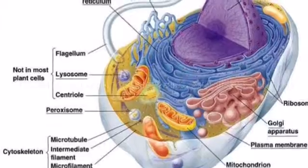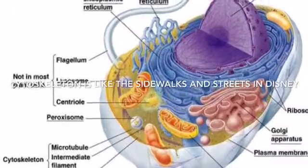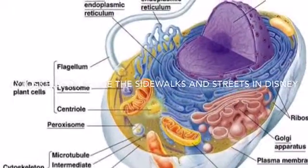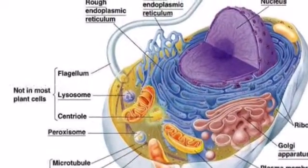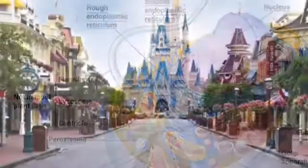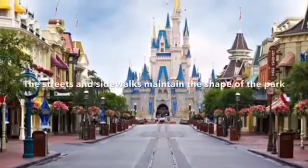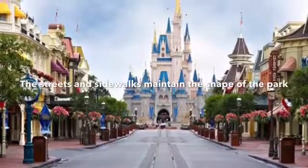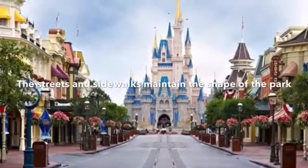The cytoskeleton is like the sidewalks and streets in Disney. The streets and sidewalks maintain the shape of the park.